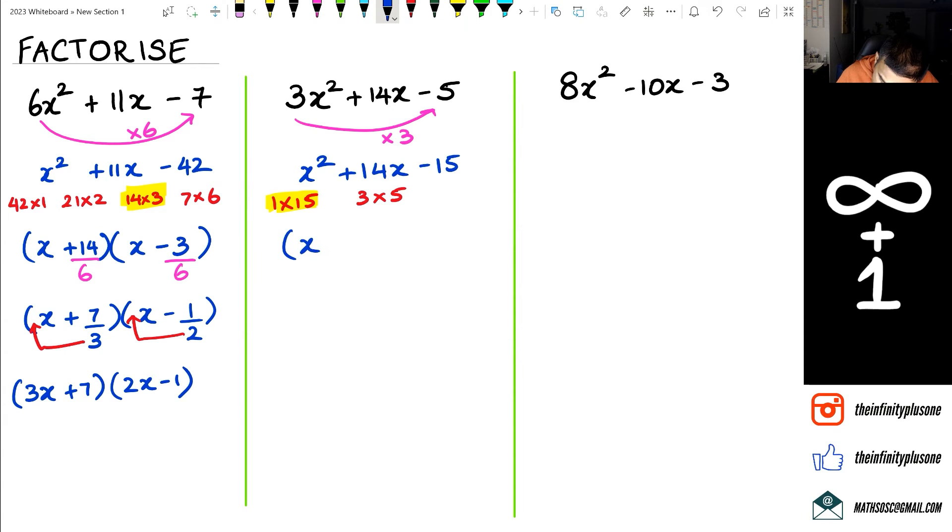So I'm going to rewrite this as x plus 15 multiplied by x minus 1. And of course what I'm going to do is divide those numbers by 3 and when I do this simplifying this I'm going to get 15 divided by 3 is 5 and here I'm going to do nothing to the 1 over 3 except move the 3 in front of the x, which means my final factors are x plus 5 and 3x minus 1.